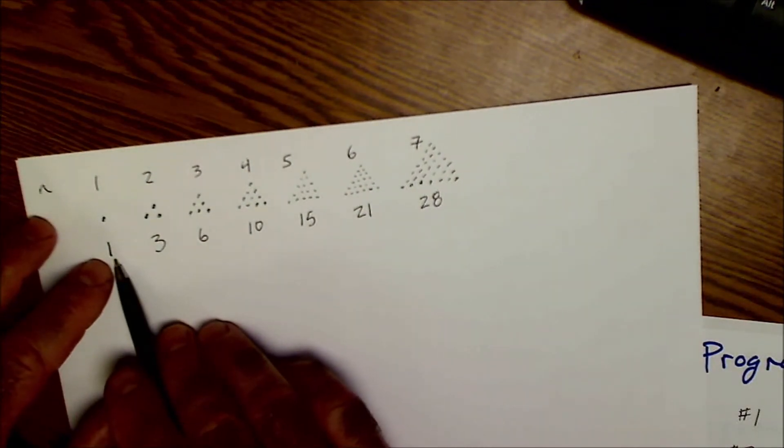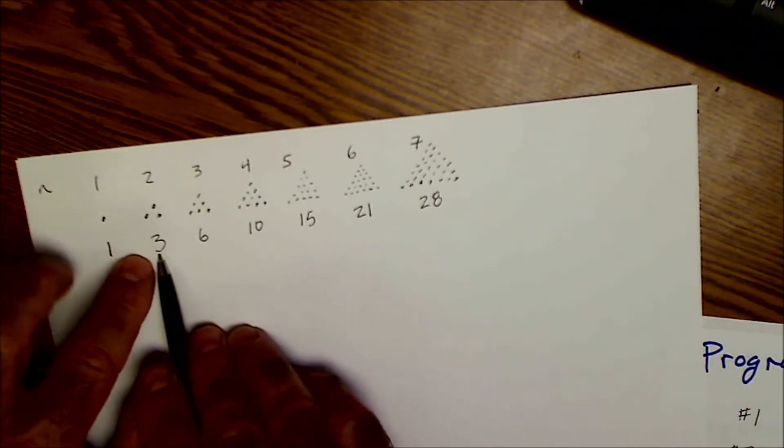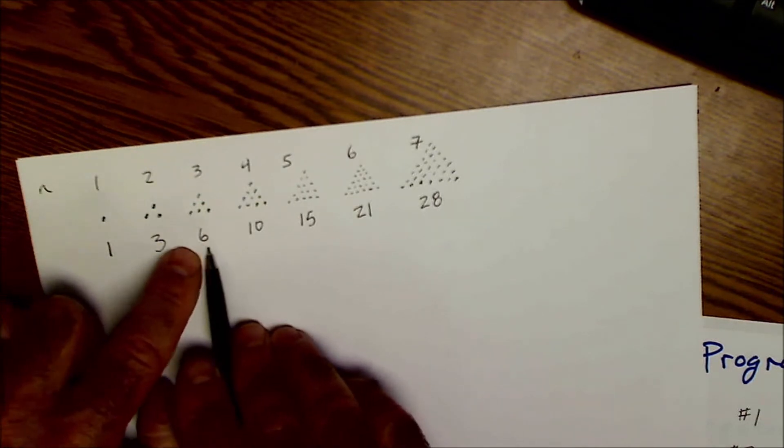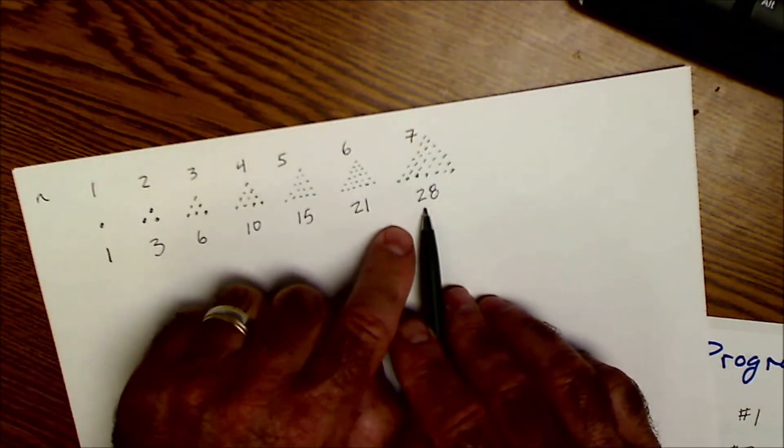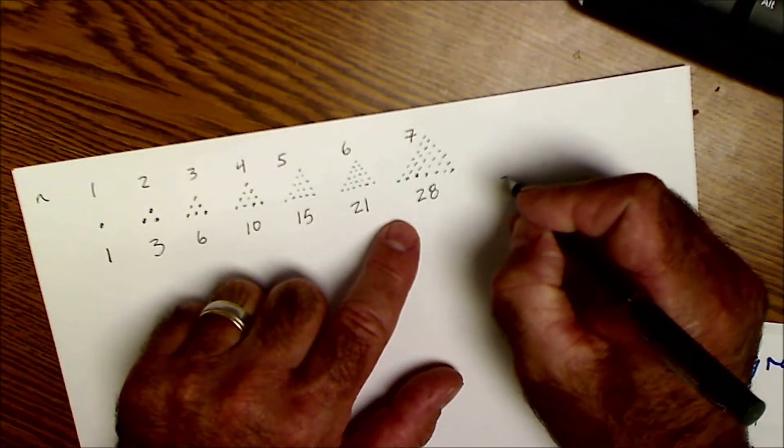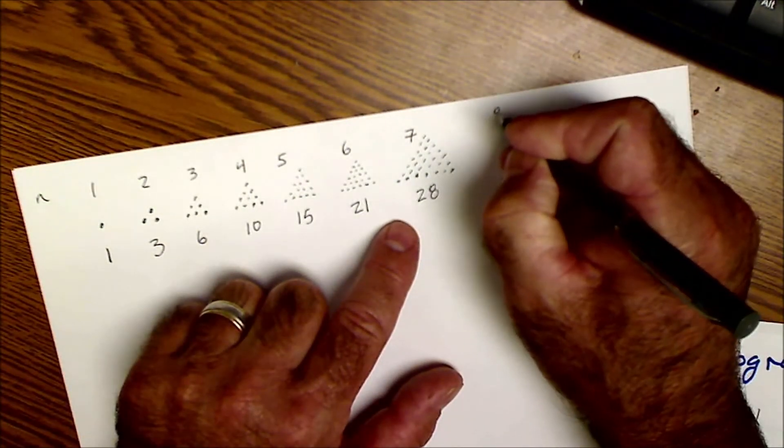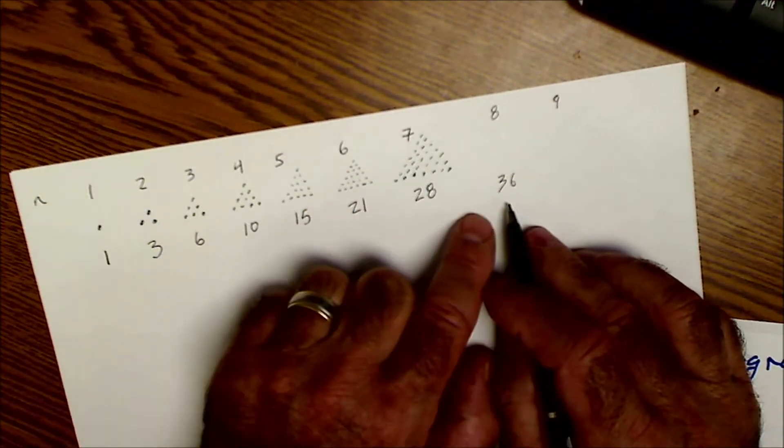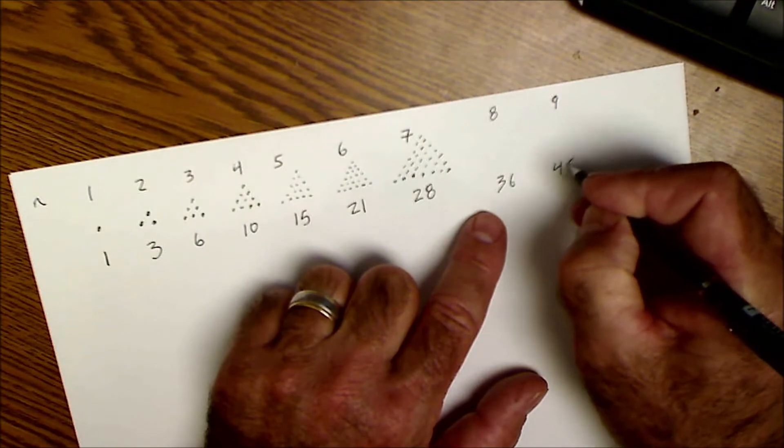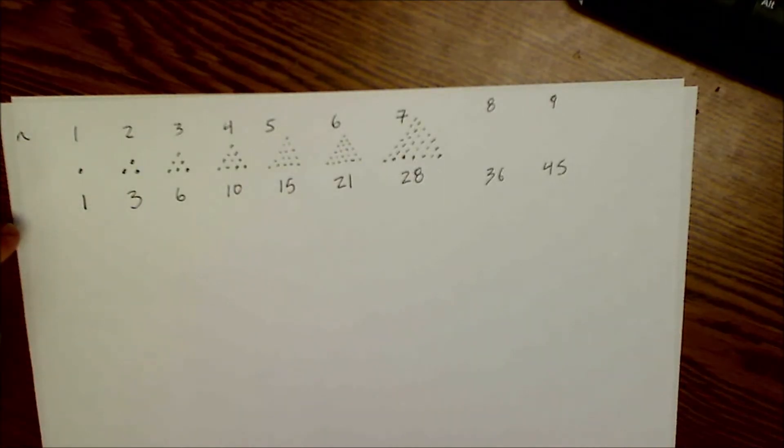Again I could figure out the sequence by going plus 2, plus 3, plus 4, plus 5, plus 6, plus 7, plus 8. So the eighth value would be 36, the ninth value would be plus 9, 45, and so on. Remember three ways to look at a progression. One's a list. That's what I have here. My first value is 1, my second value is 3, my third value is 6.